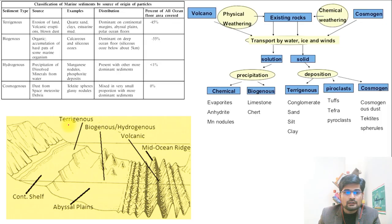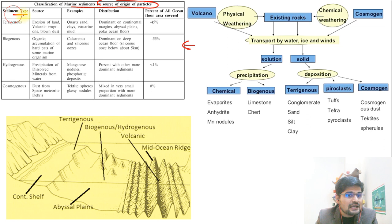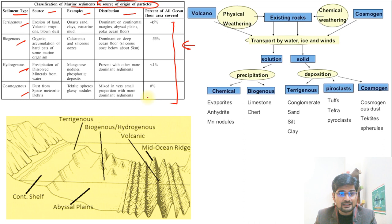The classification of marine sediments by source of origin has four types: terrigenous, biogenous, hydrogenous, and cosmogenous. Their sources, examples, distribution, and percentage in the overall ocean are given in this table. You can pause the video here to note it down for yourself.